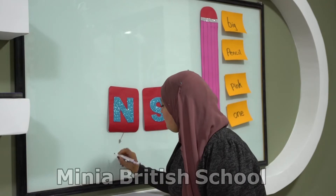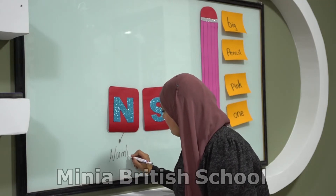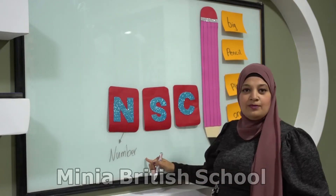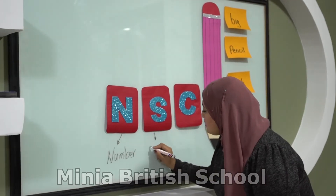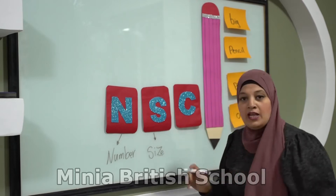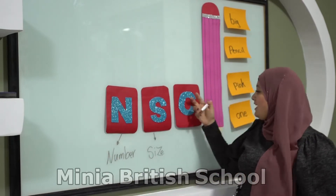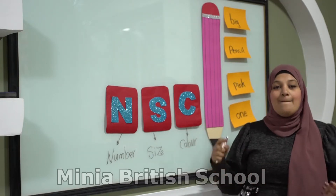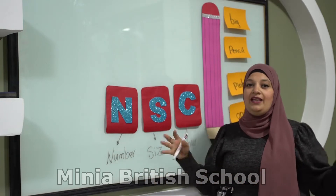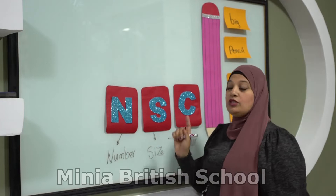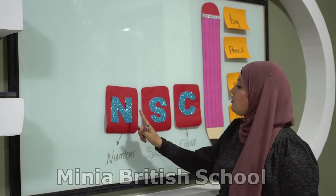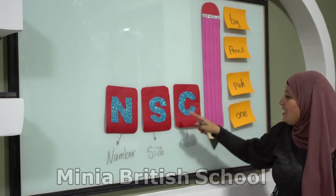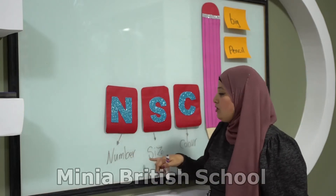N is for Number — one, two, five, eight, ten. These are numbers. S is for Size — is it big or is it small? This is size. C is for Color — blue, black, white, pink, whatever the color is. So when I need to describe something, I have to remember the letters N, S, C: Number, Size, Color. So I start with number, then size, then color.